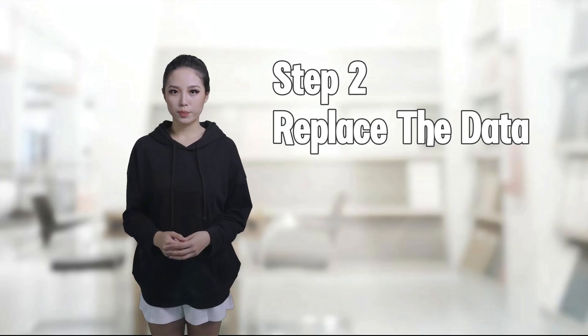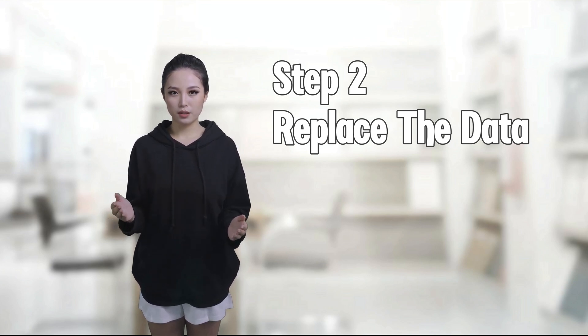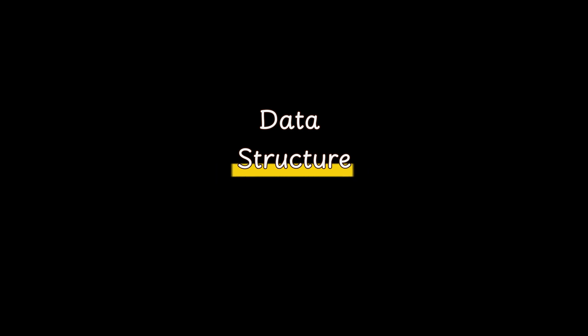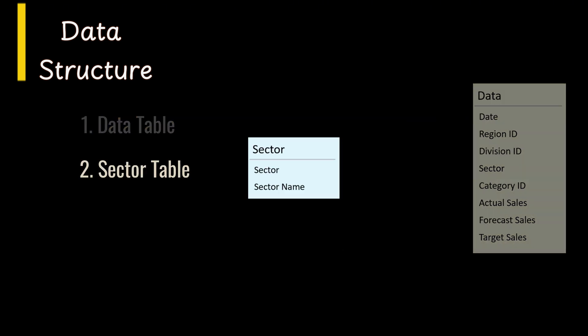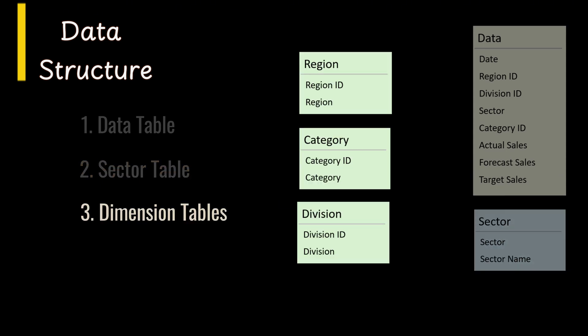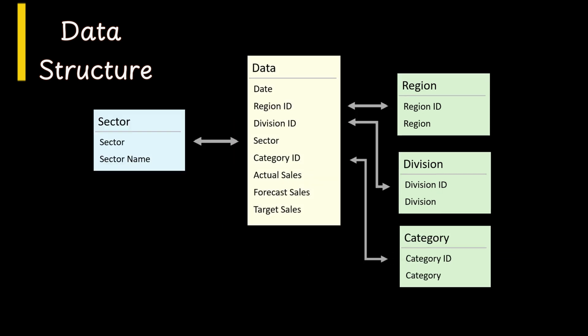Step two: replace the data set. Let's briefly go over the data structure — there are five tables. The data table contains sales info such as sales period, region ID, division ID, sector category ID, sales amount, forecast, and target. The sector table holds the business sector info. The next three tables — region, category, and division — are dimension tables that provide context for slicing and dicing the data more effectively. These tables are linked via key fields, enabling the dashboard to provide deep insights.